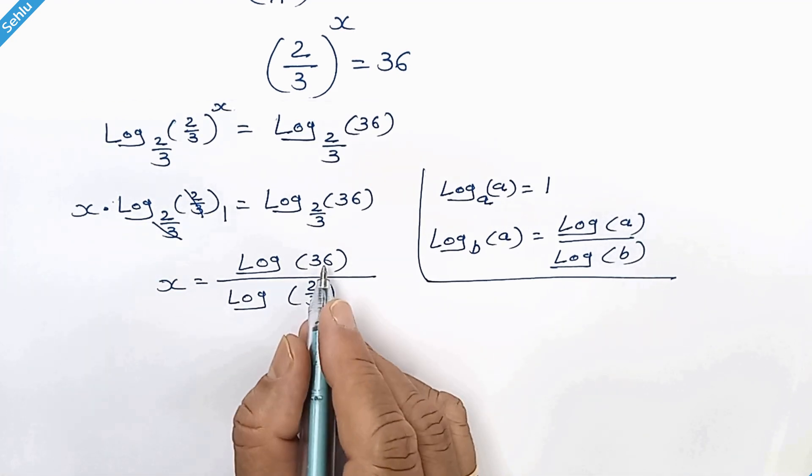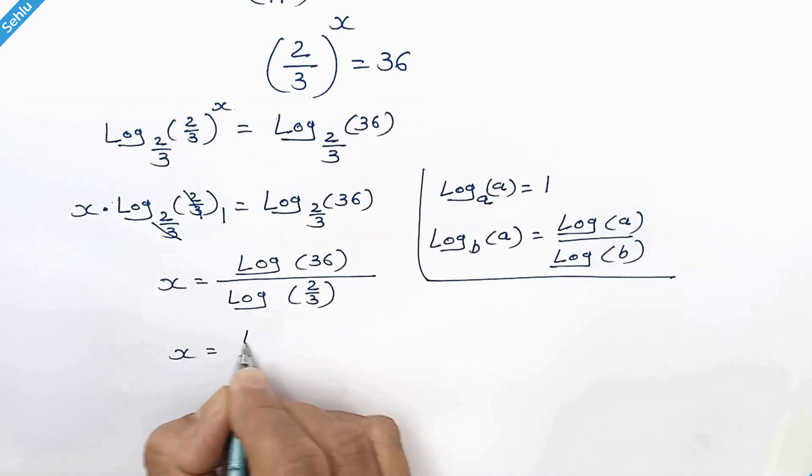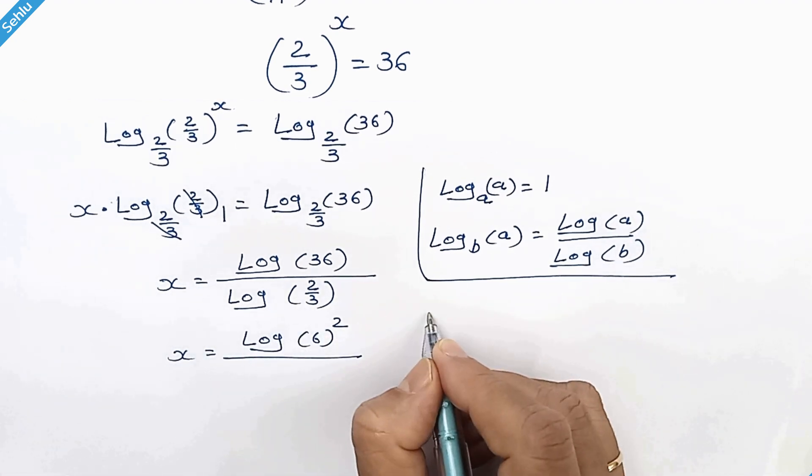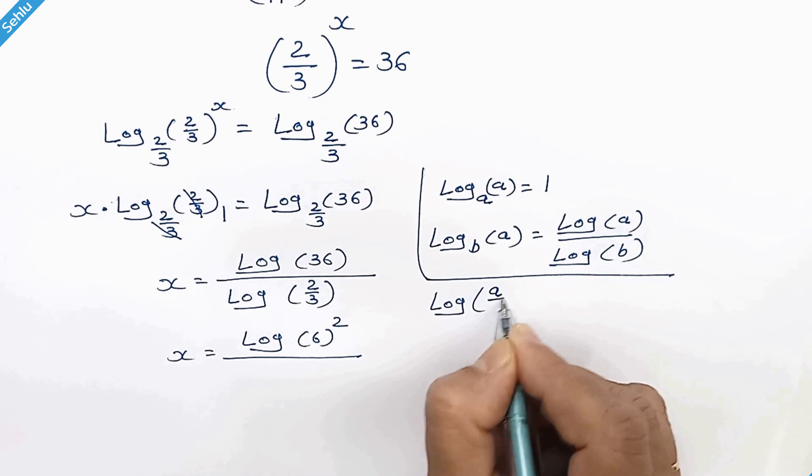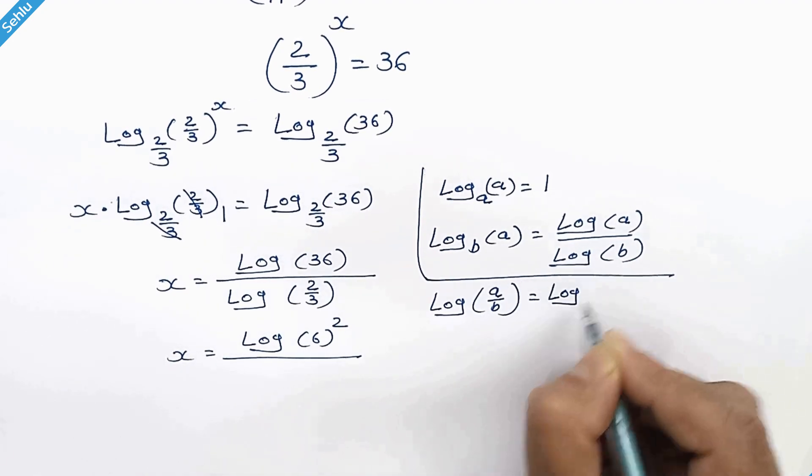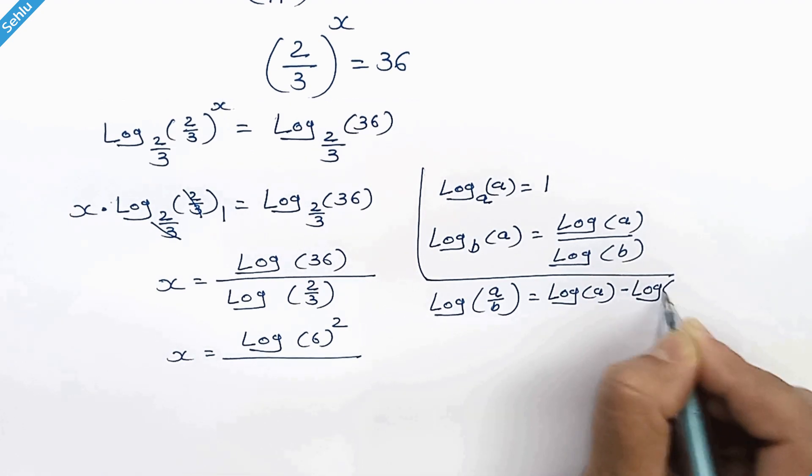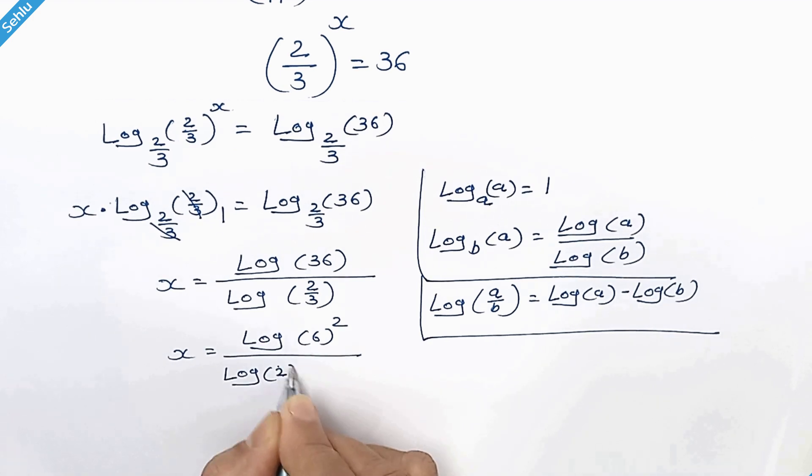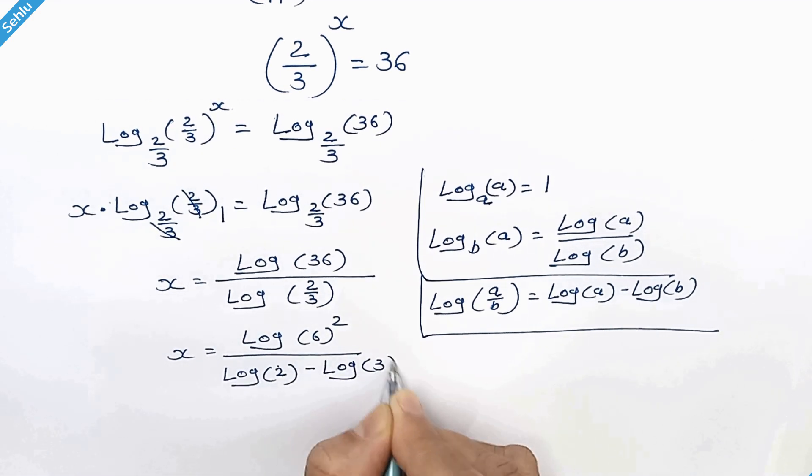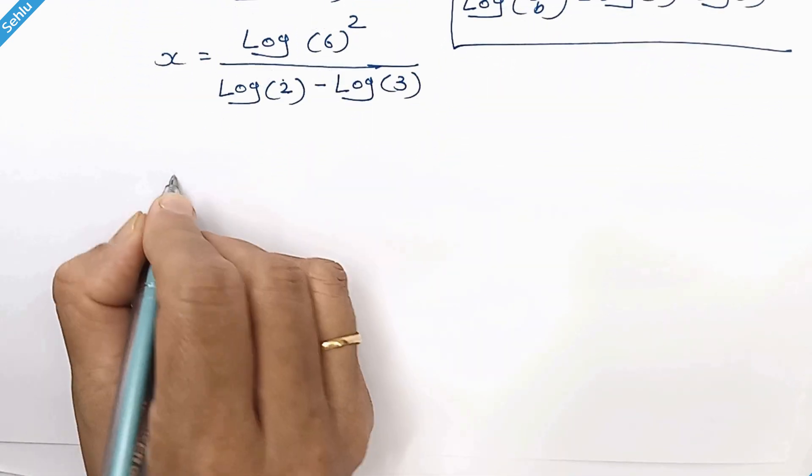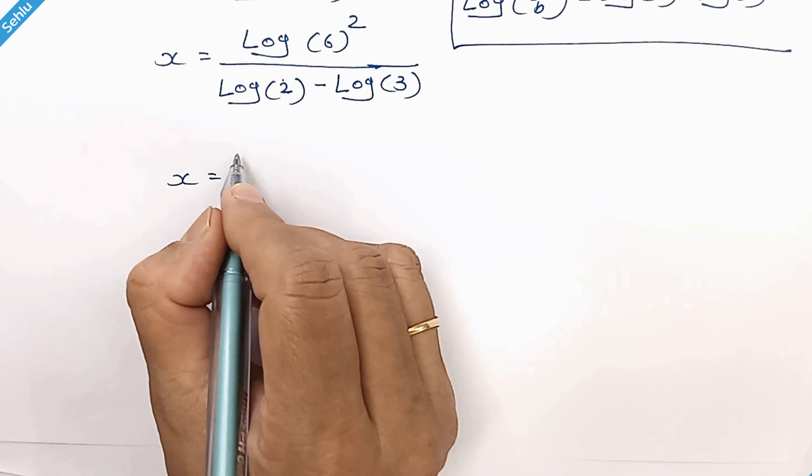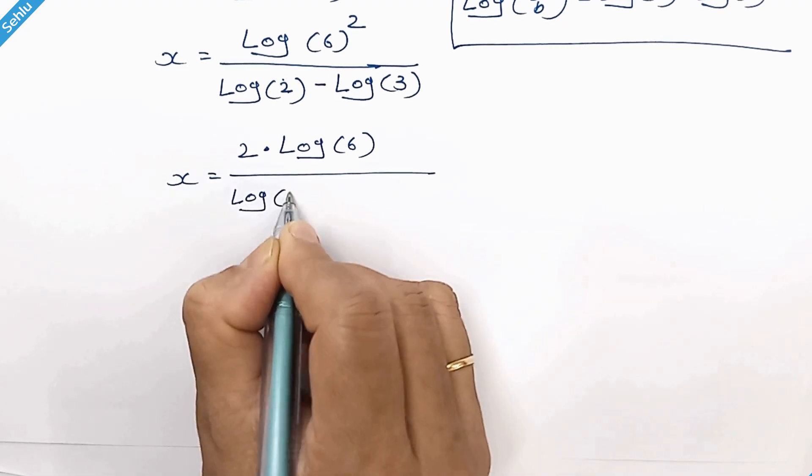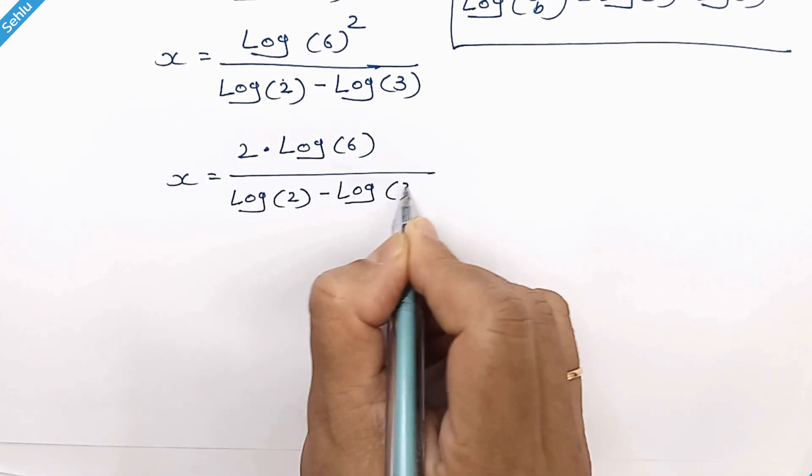Let's move a little further. Here we have 36, so it will be 6 square. And here we will apply a rule: when we have log of a over b, it can be log of a minus log of b. So here we have log of 2 minus log of 3. This 2 will be placed here, so it will be 2 times log of 6 over log of 2 minus log of 3.